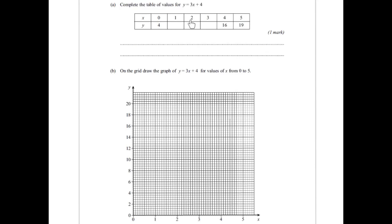So sometimes we're given values of x, like here, we're given values of 0 up to 5. And sometimes we have to make them up ourselves. But in this case, they've already put in, when x is 0, we put 0 into our equation. So 3 times 0 is 0, plus 4 is 4.